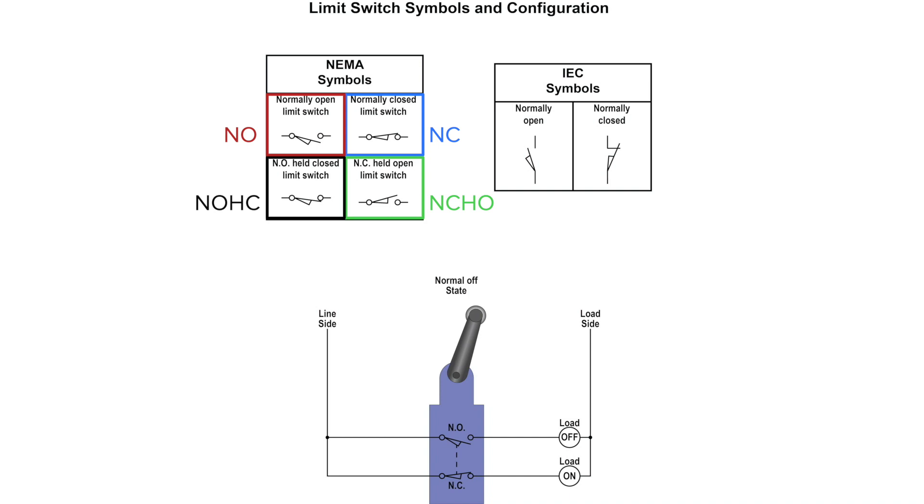The normally closed held open means that the contacts have been wired as normally closed, but something is keeping the switch actuated which keeps the contacts open.